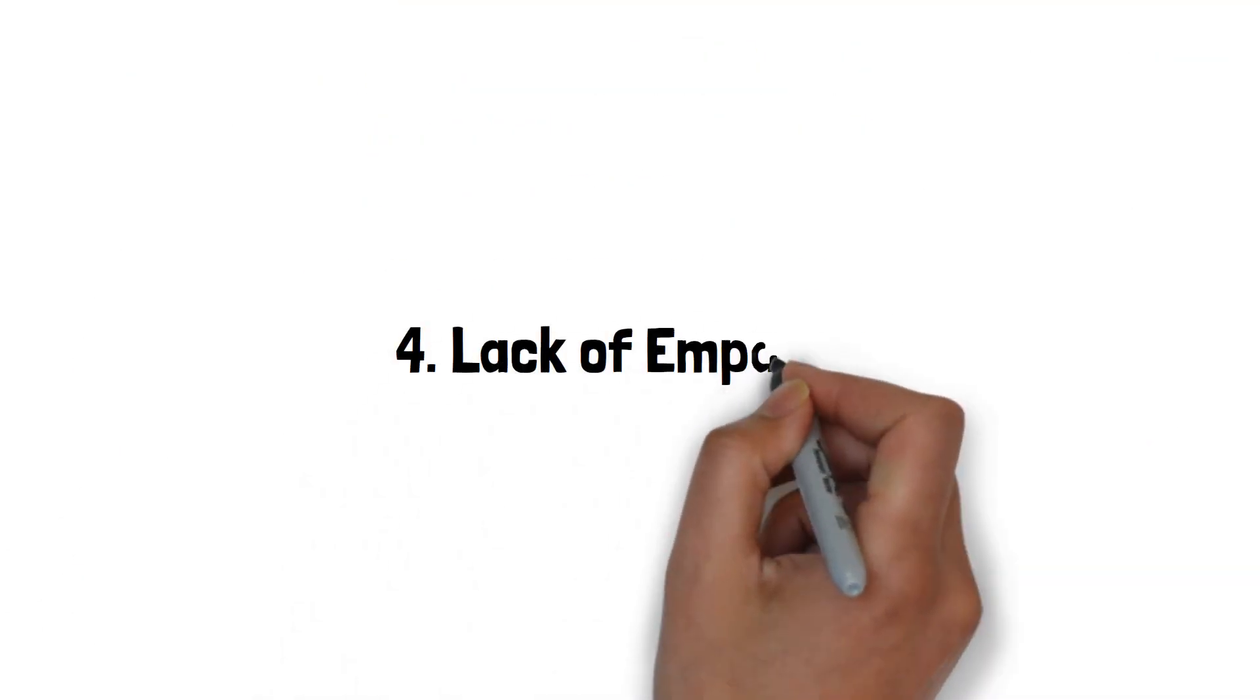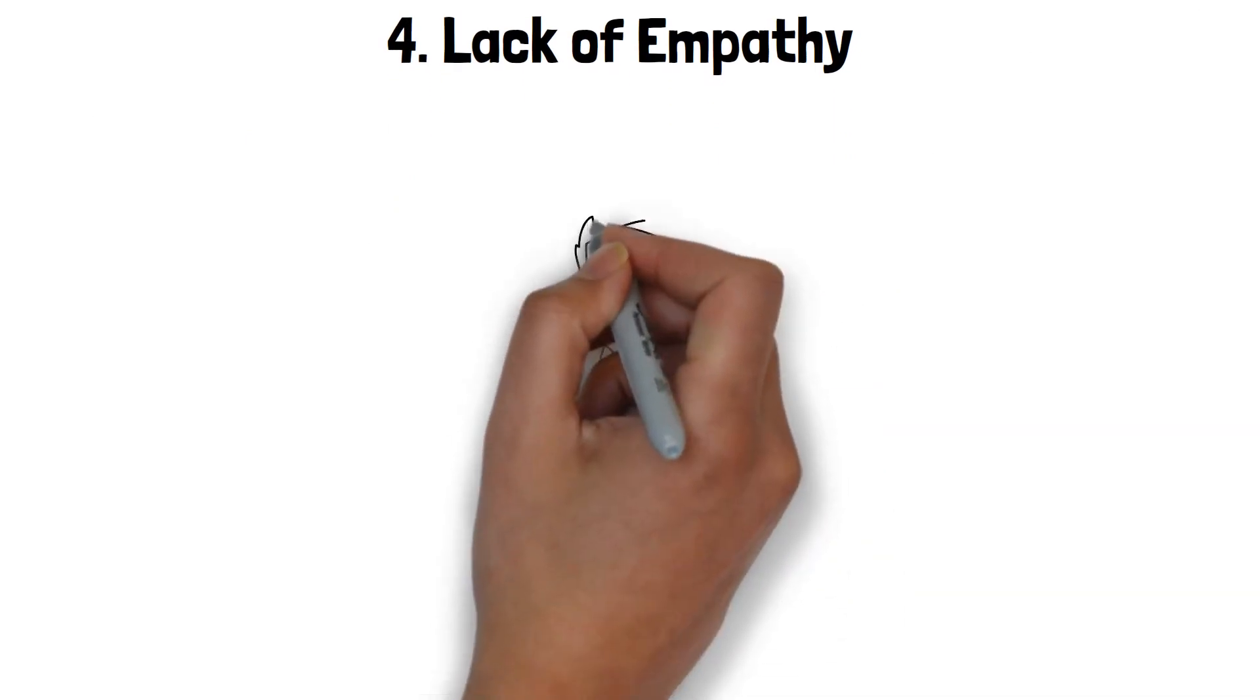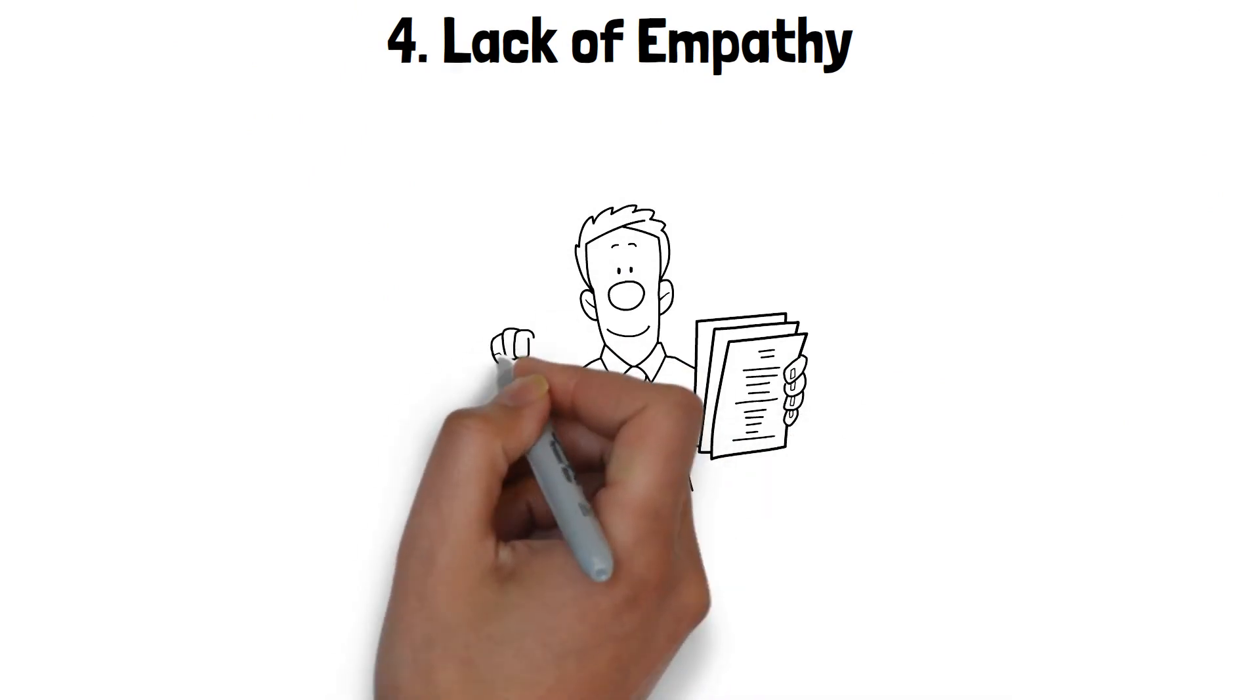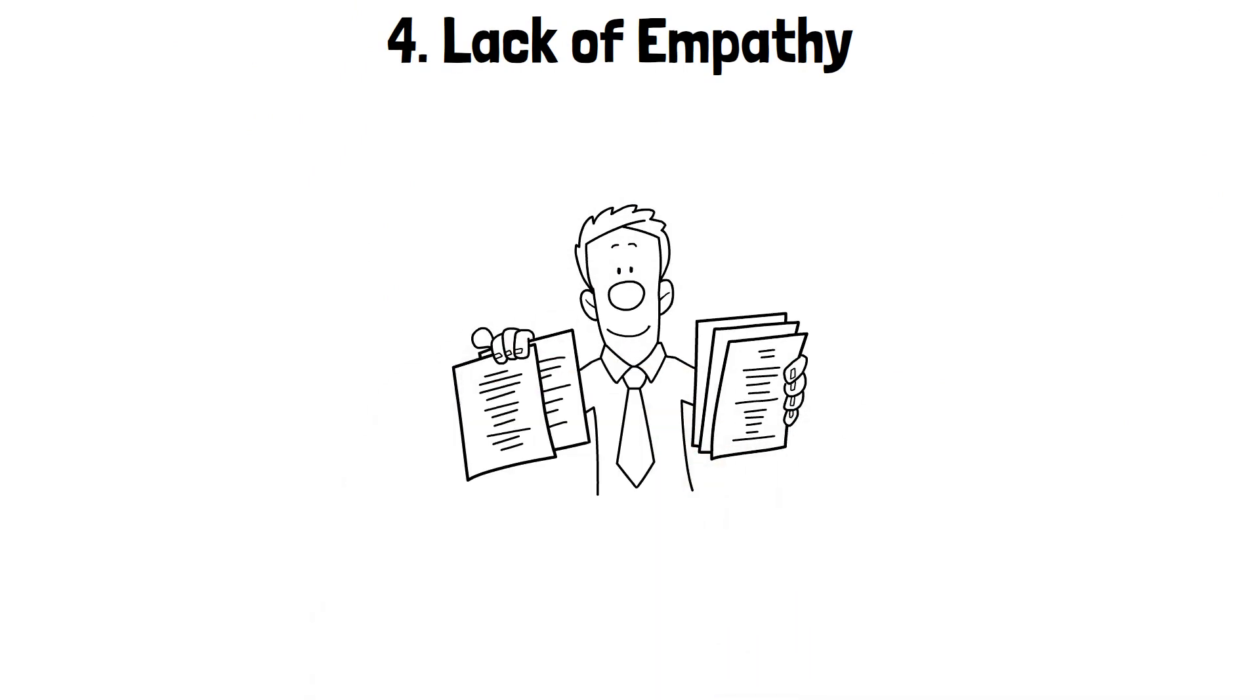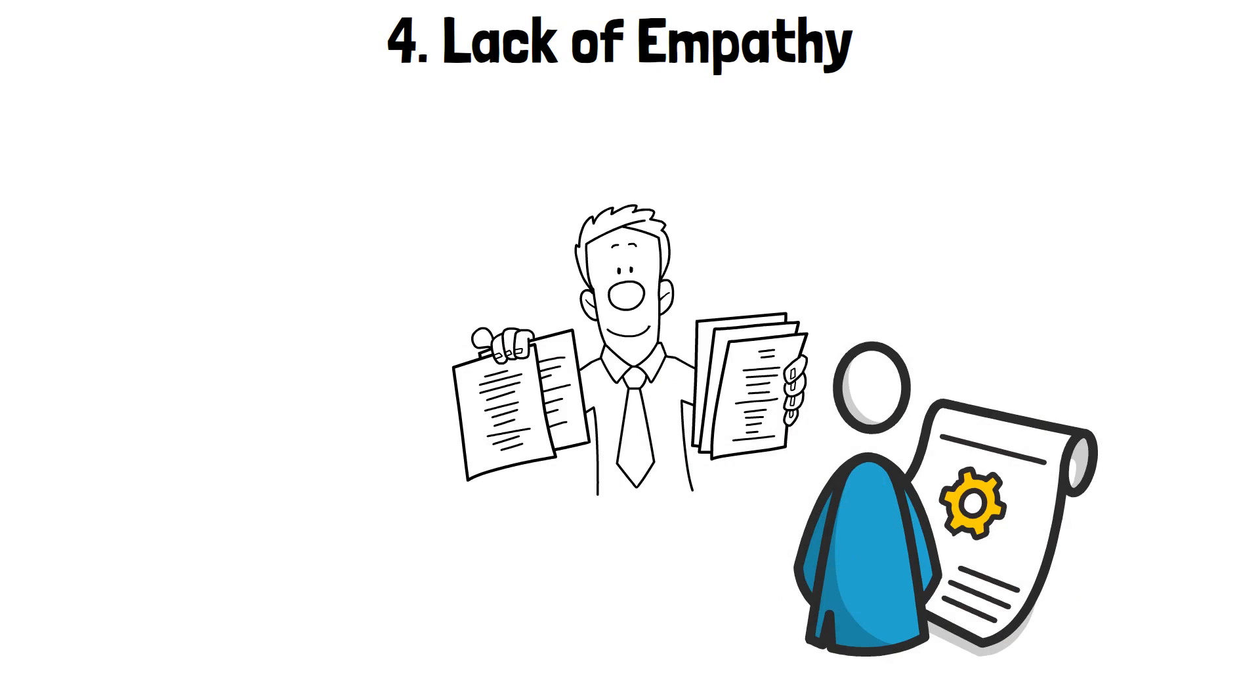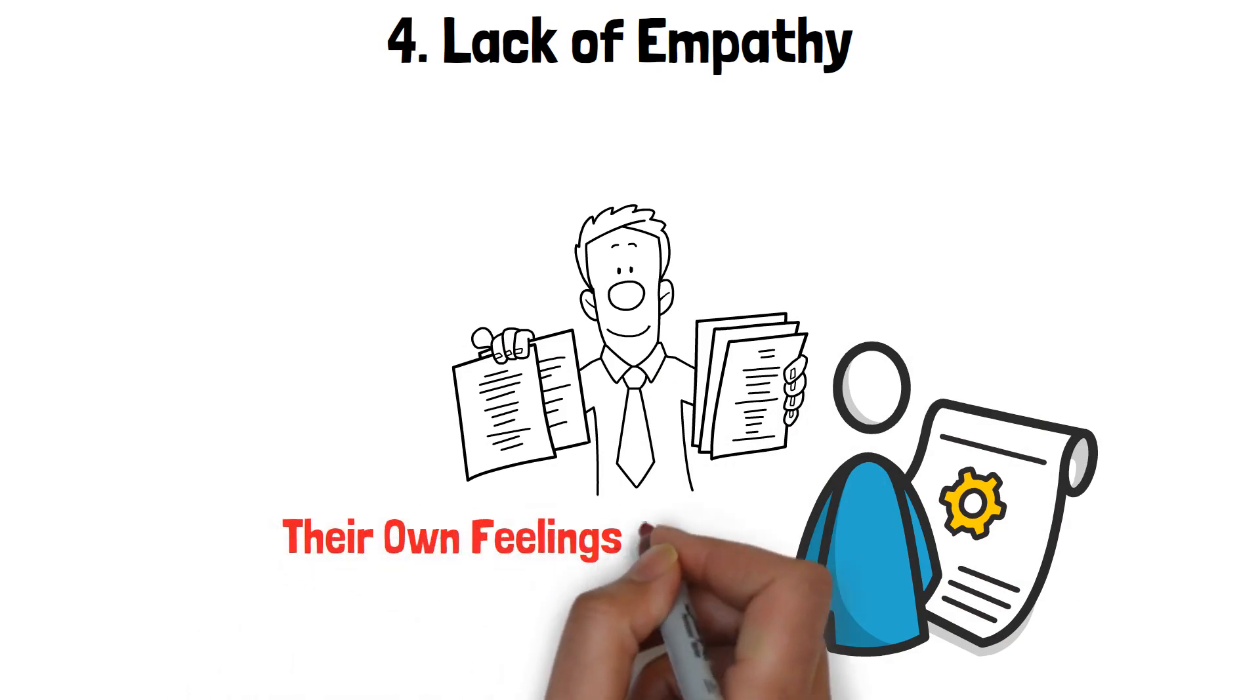4. Lack of Empathy. Living with a narcissistic wife means navigating a relationship where empathy seems to be in short supply. These individuals often struggle to connect with the emotions and needs of others. It's not that they're incapable of feeling empathy. Rather, they tend to prioritize their own feelings and desires above anyone else's.